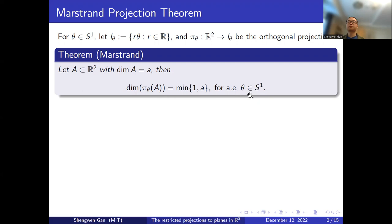Let's first look at this equation. We see that the right-hand side is always an upper bound of the left-hand side. The reason is that pi_theta of A is a subset of L_theta, which is a line, so it has Hausdorff dimension less than 1. Also, pi_theta is a Lipschitz map, so the dimension of this set is less than or equal to the dimension of A. And Marstrand's theorem says that this upper bound is obtained for almost every theta.